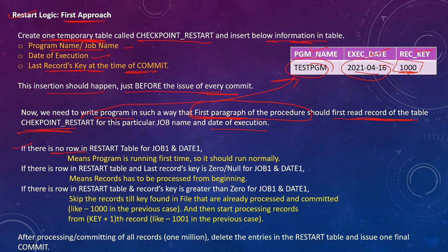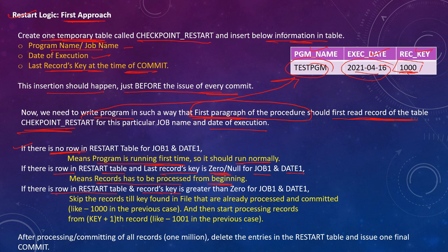There are conditions: if there is no row in the restart table for job one or date one, it means the program is running for the first time and should run normally. If there is a row in the restart table and the last record key is zero or null for job one and date one, it means records have to be processed from the beginning. If there is a row and the record key is greater than zero, skip the records that have already been processed and committed.